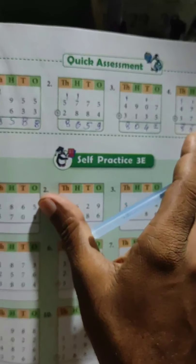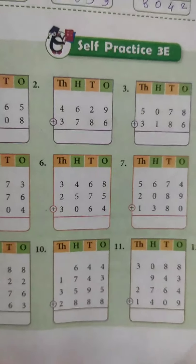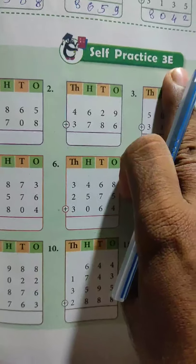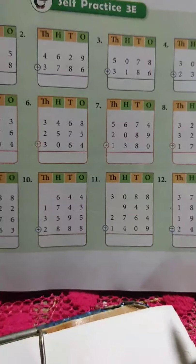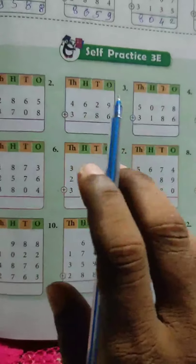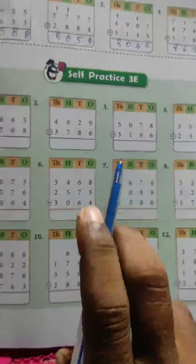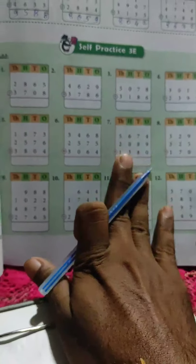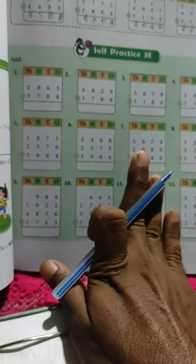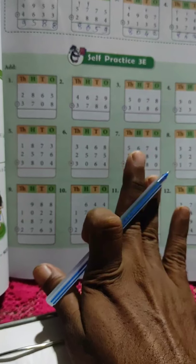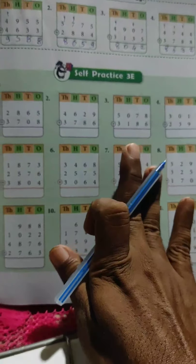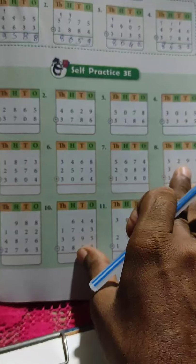This is how we solved the quick assessment. After that you have self-practice three E to solve easily. A total of twelve examples are given to you here. With carrying and addition of more than two numbers are both included. You have to solve all of them. Watch this fifteen minute explanation video carefully, then in the remaining fifteen minutes solve some examples here as classwork. Remaining examples are your homework.